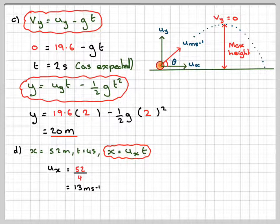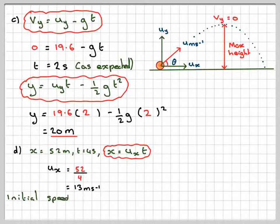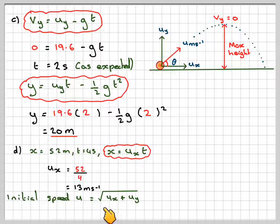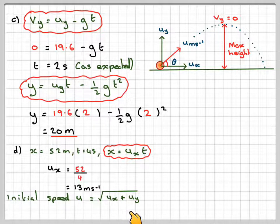And now we have to find the actual speed, the initial speed here. So we can get that by doing the magnitude. So the square root of ux plus uy.